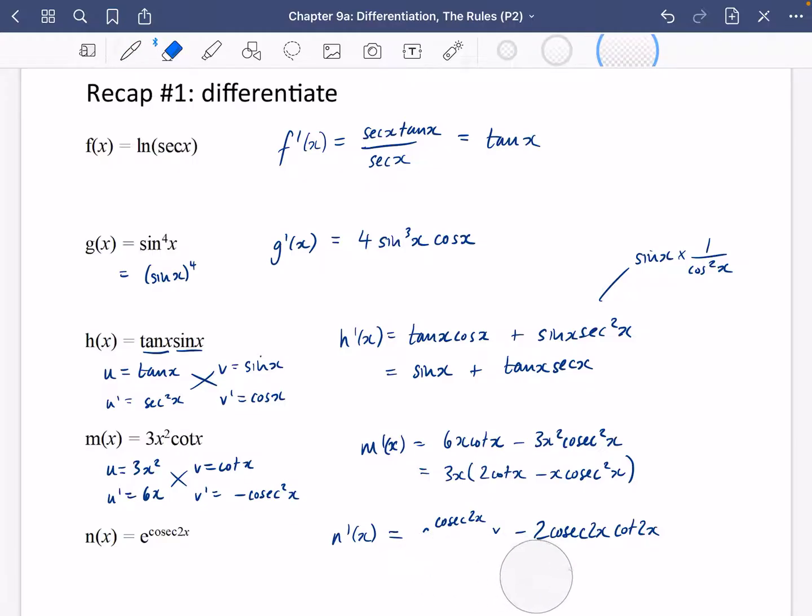In fact, I usually put e outside the front so I'm going to do that and write it like this: minus 2e to the cosec 2x, cosec 2x cot 2x.